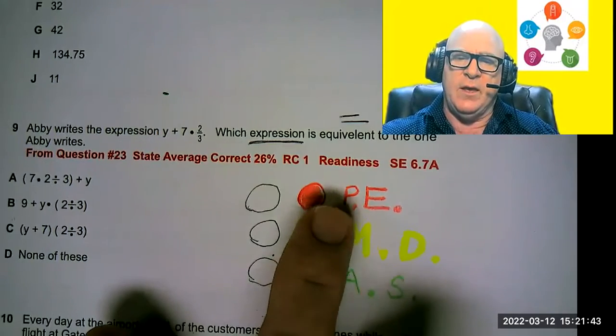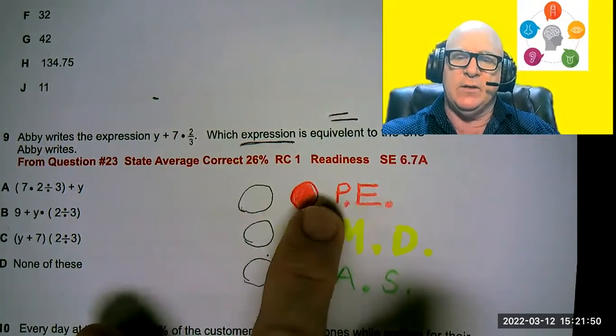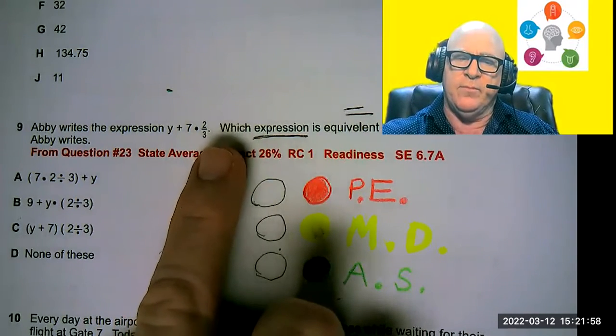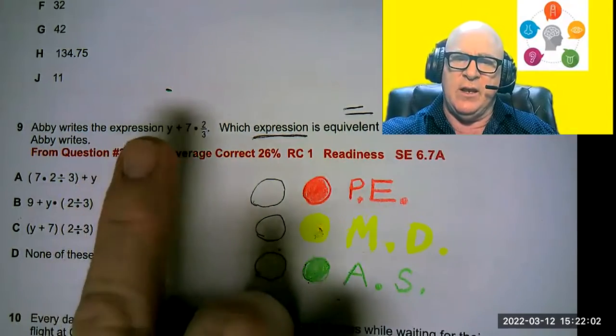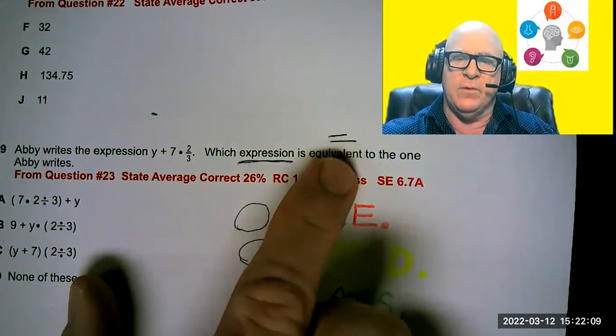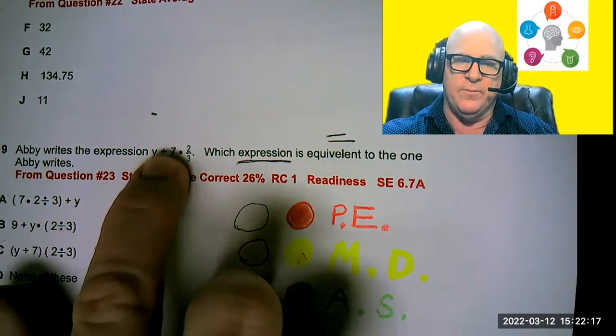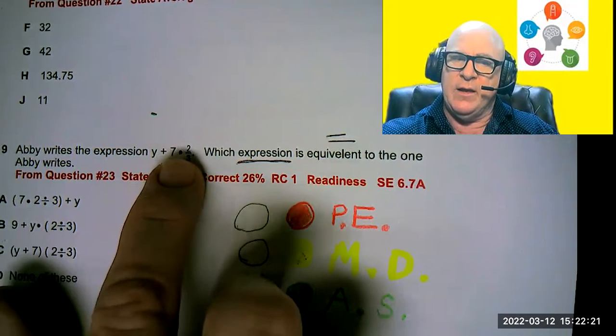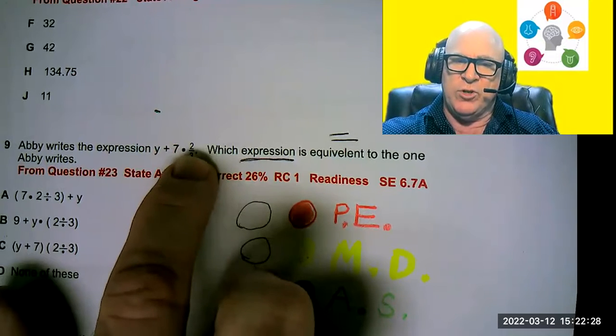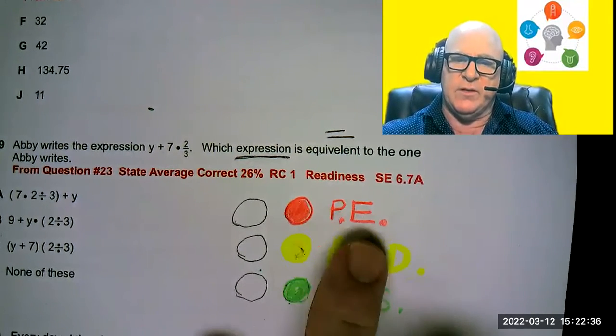So what I'm going to suggest that you do is think of the PE, not as physical education, but the red light, the 911, the priority is going to be parentheses and exponents that you find in the problem or the answer choices to see if it matches. Because the question says which expression is equivalent, the same to the one that Abby writes, and this is the one that Abby wrote. You can see that it has a plus sign here and it's first, followed by a dot, which as we know in math is multiplication, followed by a fraction, which means take the top number and divide it by the bottom number. So there are no parentheses or exponents.